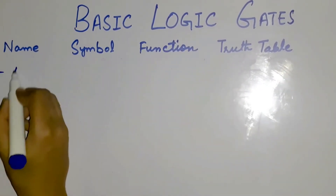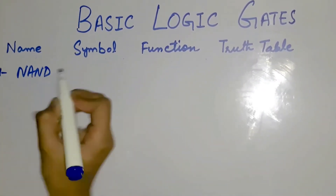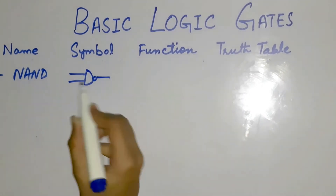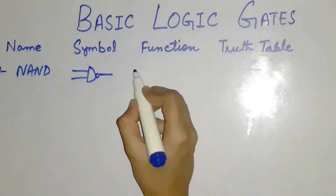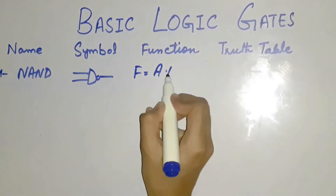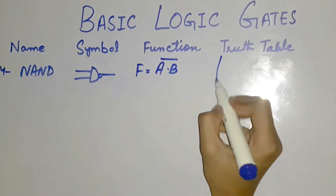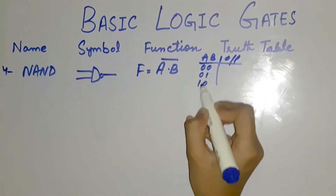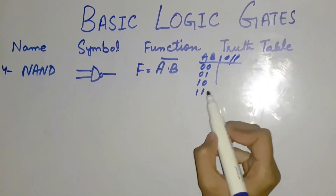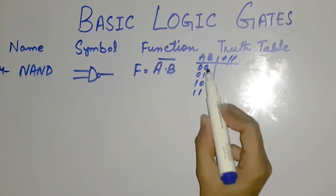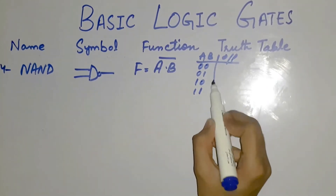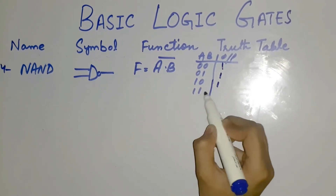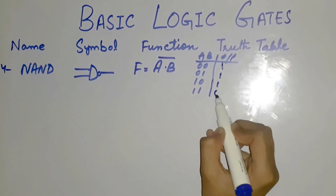The fourth one, we have the NAND gate. It is actually the NOT of AND, represented by the AND symbol with a bubble after it. The function is f equals a times b, the whole bar. Its truth table is: a=0,b=0 gives 1; a=0,b=1 gives 1; a=1,b=0 gives 1; a=1,b=1 gives 0. In AND we have 1 only if both a and b are 1, but in NAND we have 1 when at least one input is 0, and when both are 1 it becomes 0.